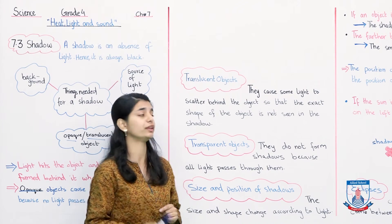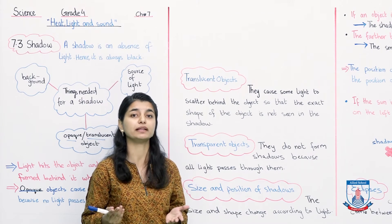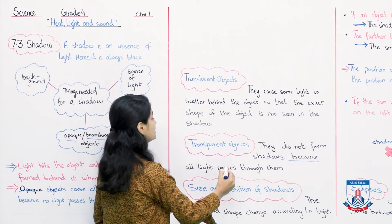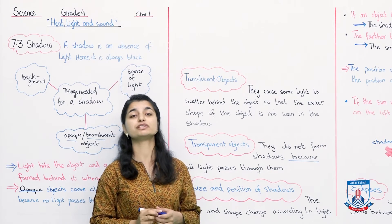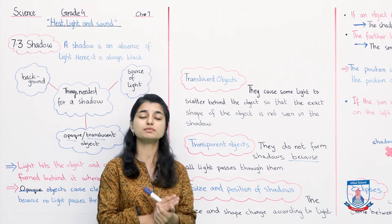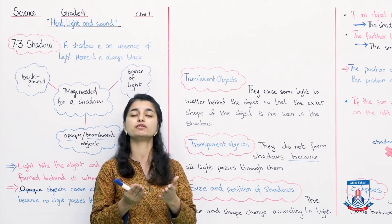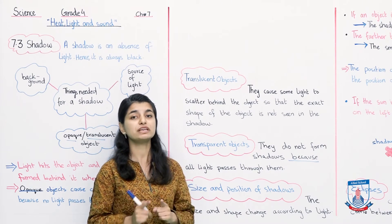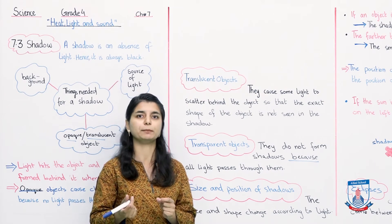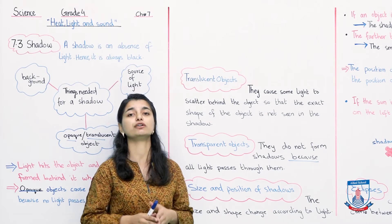The third type of objects are transparent objects. Transparent objects usually do not form a shadow, because all light passes through them. An example is pure glass — all light passes through it and nothing is stopped. Because the light passes completely through the object, no shadow is formed. A shadow only forms when light does not pass through an object, but in transparent objects the light passes through, so no shadow is created.